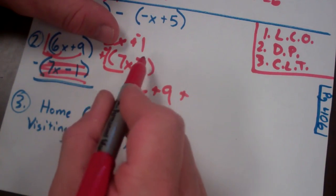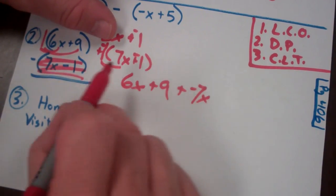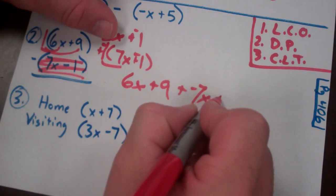Plus, oh, I should have another leave change opposite there, negative 7x and positive 1.